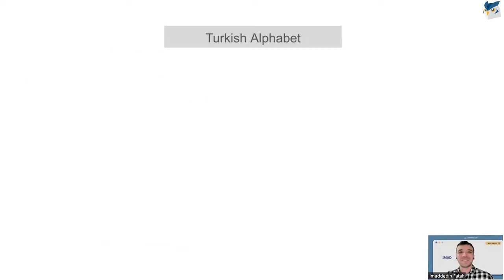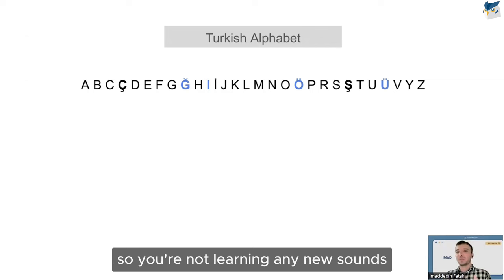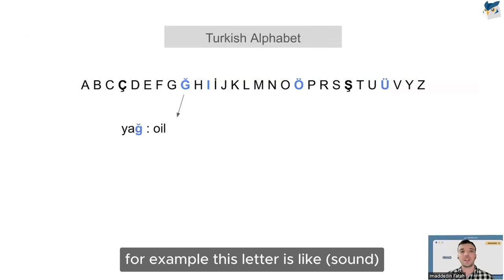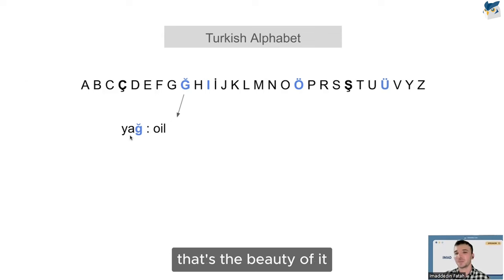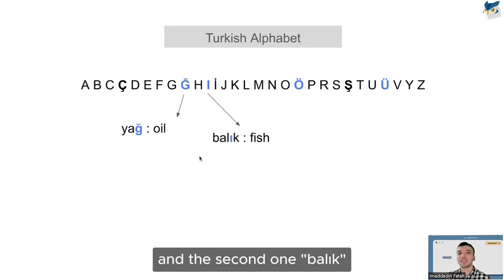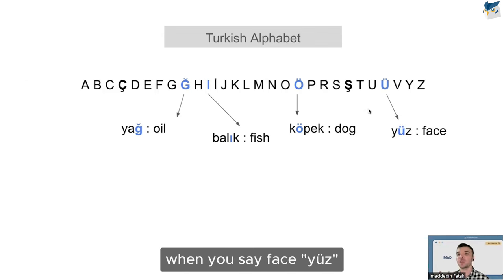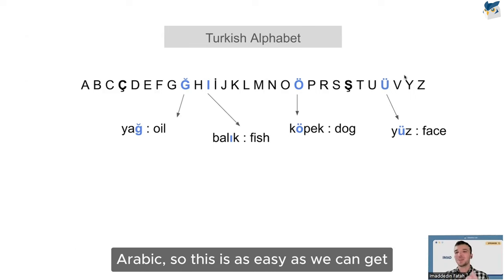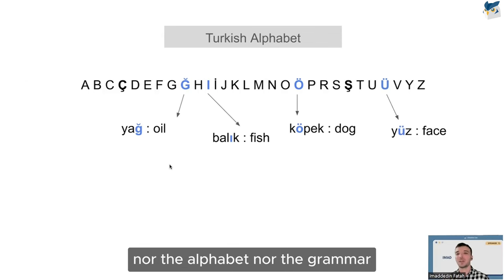Another advantage is that Turkish uses a Latin-based script, so most letters are almost exactly the same as ones you already know. There are only maybe one or two new sounds, highlighted in blue — for example the letter that sounds like a soft 'y', and the letters for 'ö' and 'ü'. Even if you can't pronounce them perfectly, people will still understand you. The pronunciation and alphabet should not be a problem when you start learning Turkish.